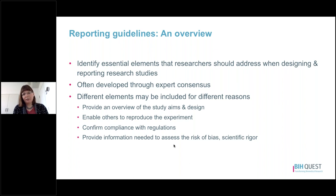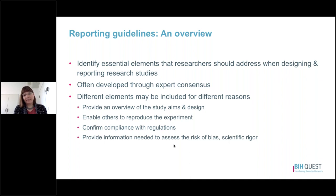Reporting guidelines are very useful for identifying essential elements that research should address when designing and developing their research studies. These types of reporting guidelines are often created through expert consensus, so groups of experts discuss what items are really important to report for reproducibility and transparency, and then they build the guideline around those discussions.